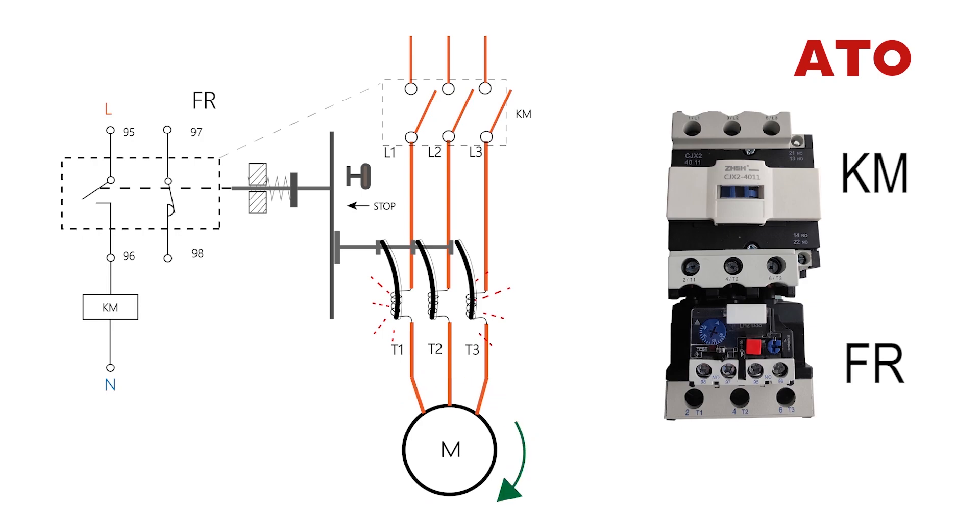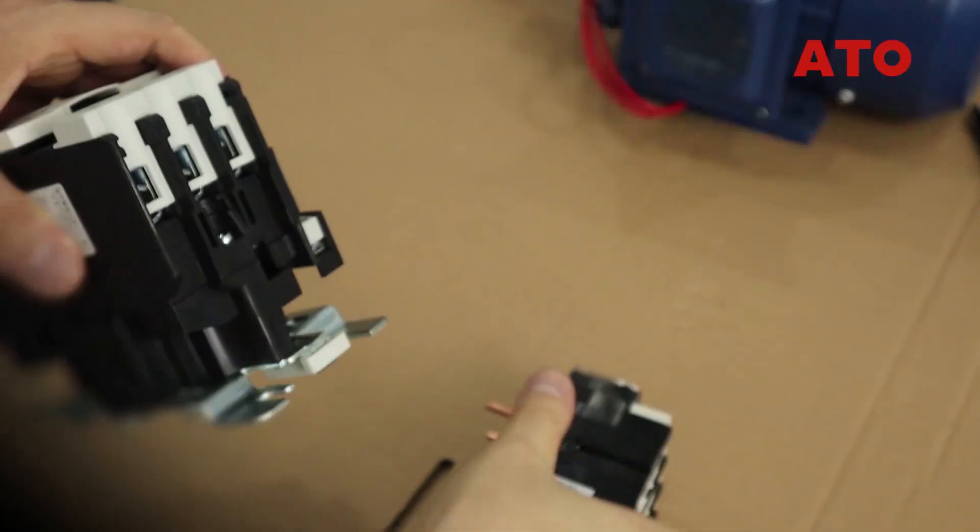Once the motor is overloaded, the bending degree of the bi-metallic sheets increases to push the guide plate to separate the normally closed contacts. Now that the control circuit of the motor has been cut off, the motor is put under protection against electrical faults.